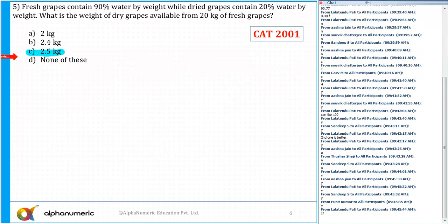It says fresh grapes contain 90% water by weight while dried grapes contain 20% water. So we know that the fresh grapes and the dried grapes. What is the weight of dry grapes available from 20 kg of fresh grapes?